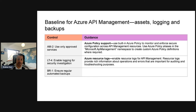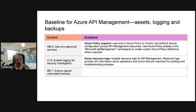The final baselines for API Management cover asset management, logging, and backup: AM2, LT4, and BR1. AM2 is around asset management — using only approved services, implemented via Azure Policy. LT4 is enabling logging for security investigations within API Management. BR1 ensures regular, automated backups are in place.